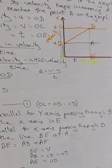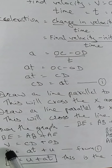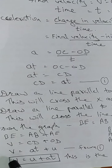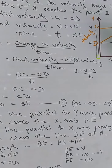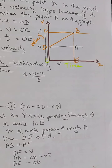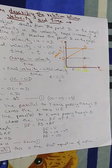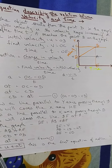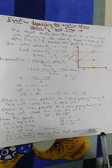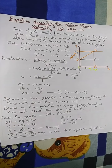So for this equation, putting the values, we get V equals AT plus U. Just rearranging, we get the final equation: V equals U plus AT. This is the first equation of motion. Hence, we have derived Newton's first equation of motion.